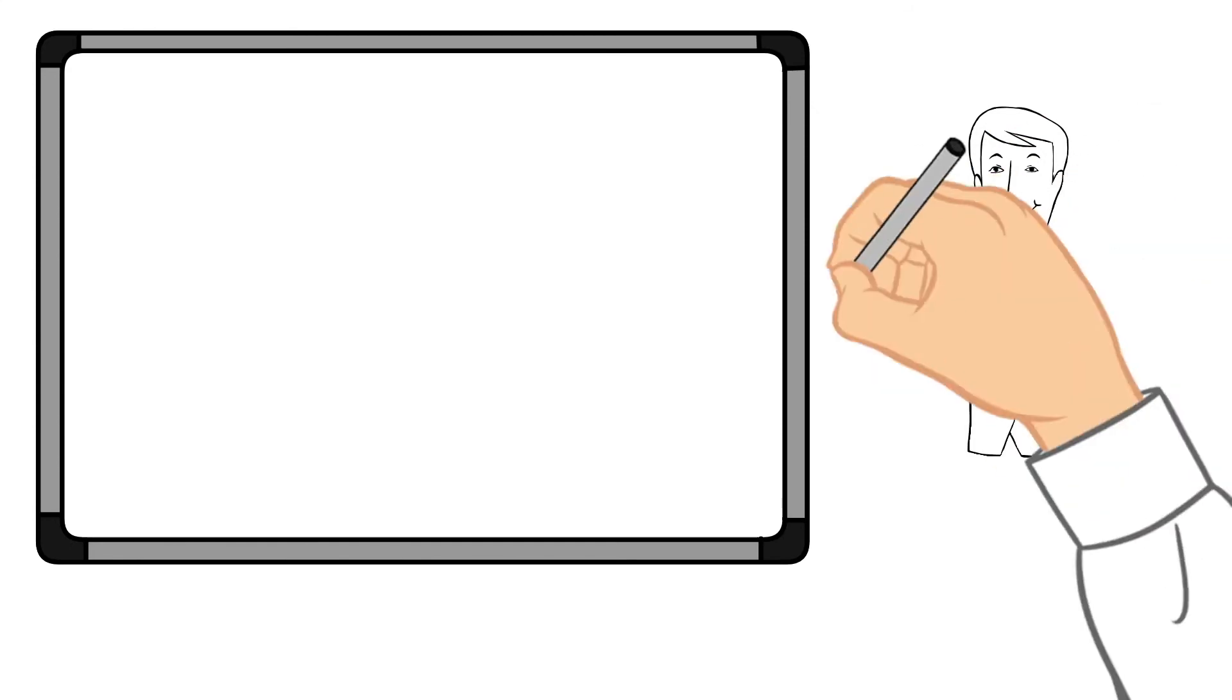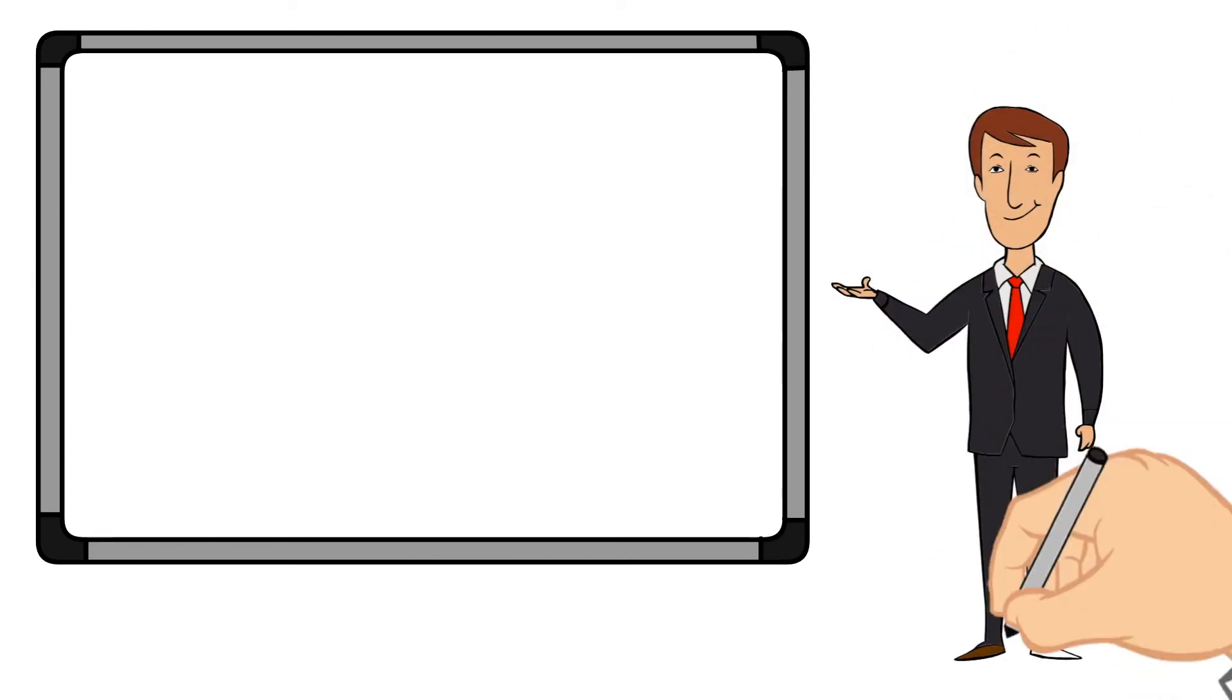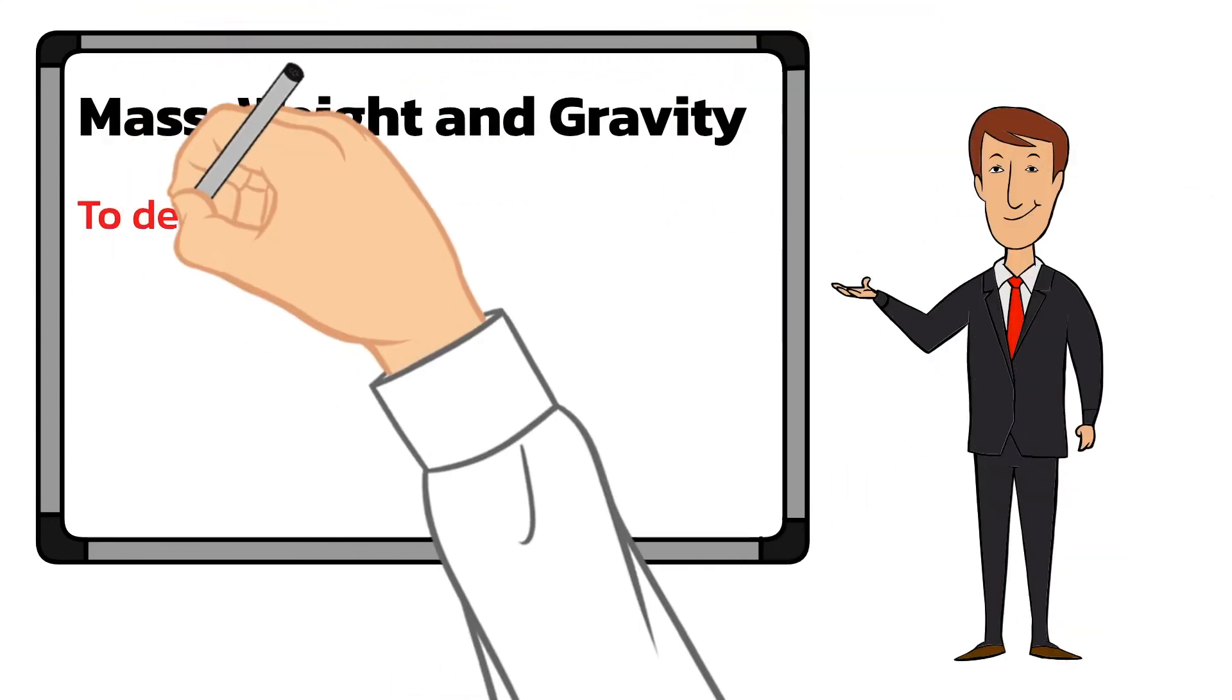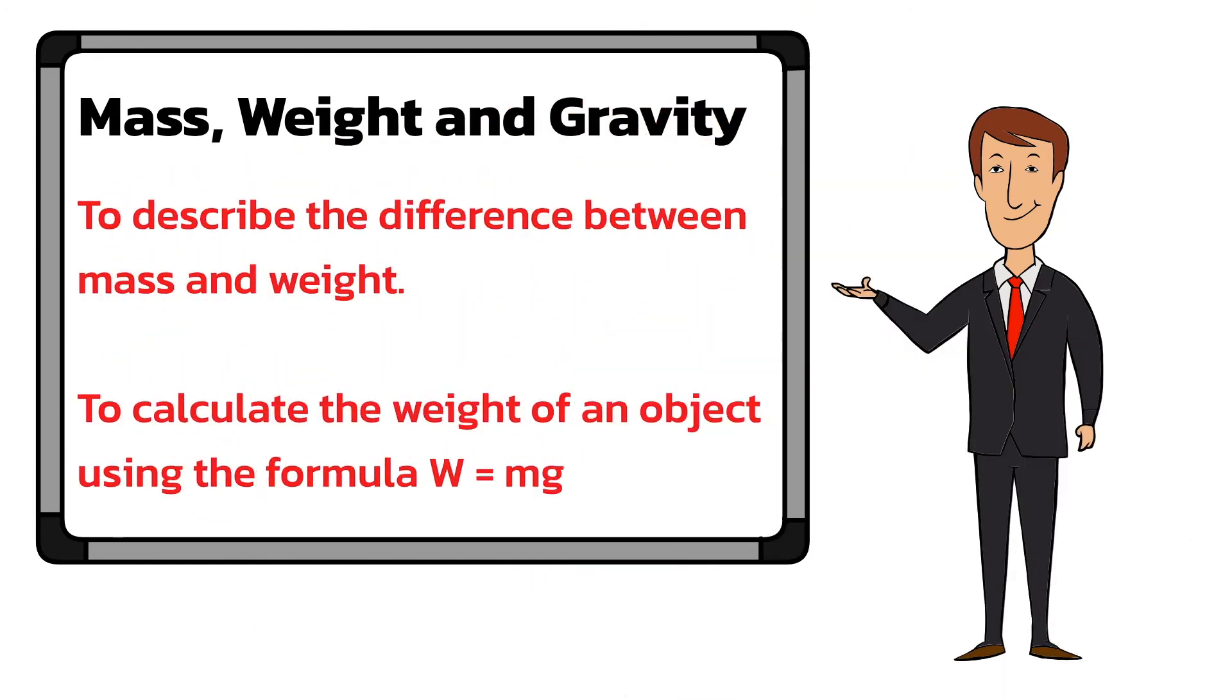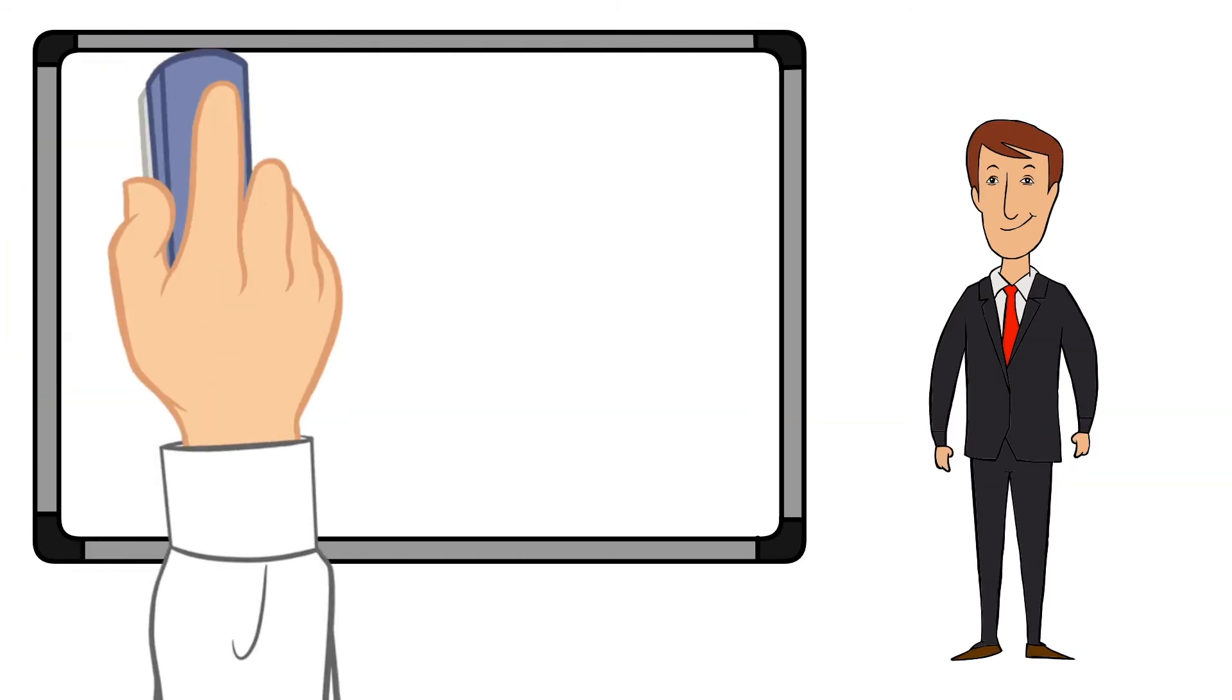So to summarize, mass is the amount of matter in an object, measured in kilograms, and it is the same everywhere in the universe. Weight is the force acting on an object due to gravity, measured in newtons, and your weight is different on each planet. Finally, to calculate the weight of an object you use the formula weight equals mass times gravitational field strength, or W equals m times g.